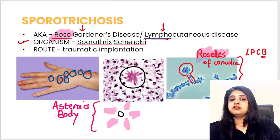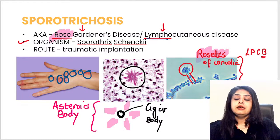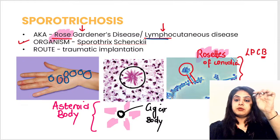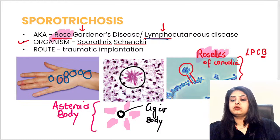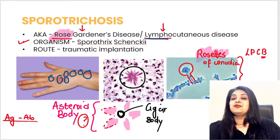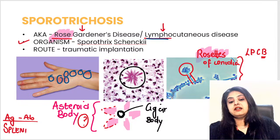In the center you see a round central dot with pink projections around it forming a star — this is the asteroid body. The dot in the center is the cigar body, but note it is shown from the end-on view, appearing as a dot rather than the elongated cigar shape. The pink material around it is an antigen-antibody reaction, known as the Splendore-Hoeppli phenomenon.